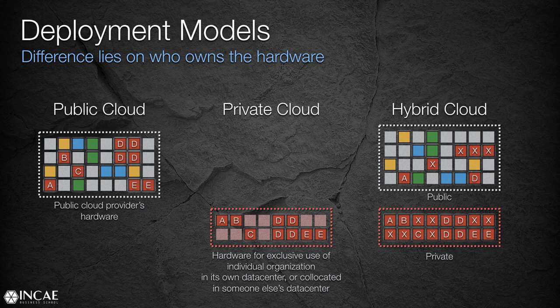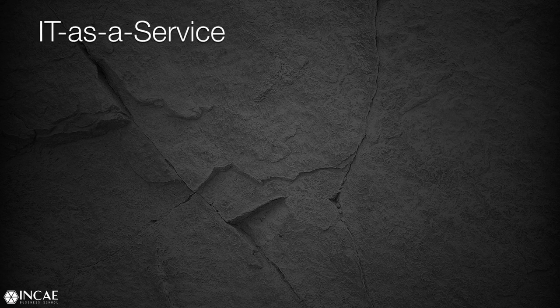Those are the three main deployment models. Some people also talk about community cloud, which is basically a cloud where your neighbors are from organizations that you know, but that's not really a term commonly used in the industry. So far we've spoken a lot about hardware, platform, and software offered on demand. Overall, the entire IT industry is shifting to this thinking of IT offered as a service.